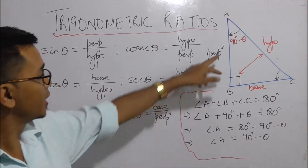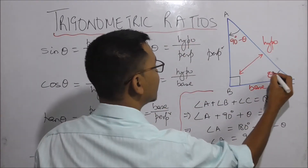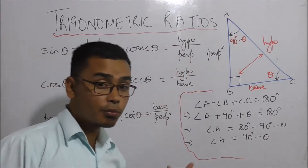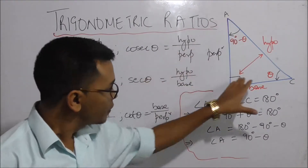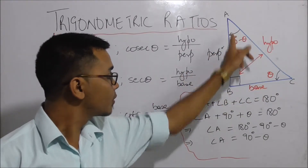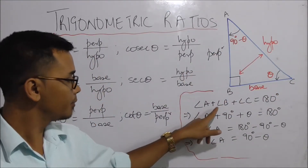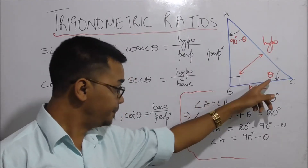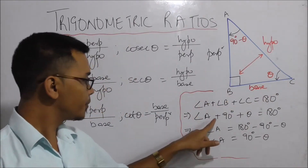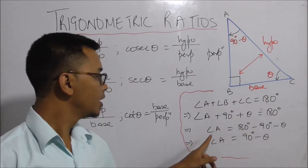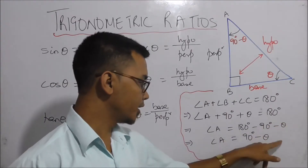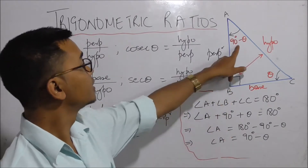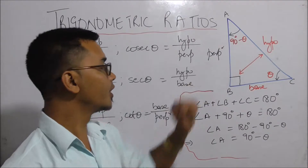If you look at the right angle triangle, the right angle is 90 minus theta. Now, by the angle sum property of a triangle, angle A plus angle B plus angle C equals 180 degrees. Angle B is 90 degrees and angle C is theta, so angle A plus 90 plus theta equals 180. Therefore, angle A equals 90 degrees minus theta.